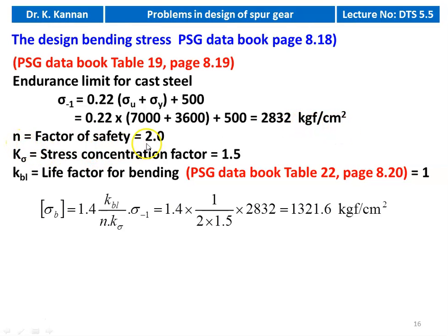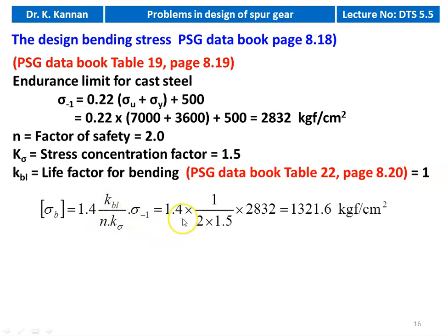Factor of safety = 2, stress concentration factor = 1.5, life factor for bending KBL = 1. Design bending stress = 1.4 × KBL / (n × Kσ × σ₋₁) = 1.4 × 1 / (2 × 1.5 × 2,832) = 1,321.6 kgf/cm².